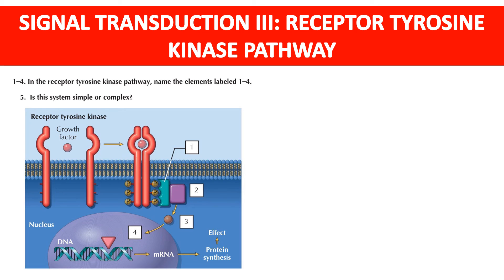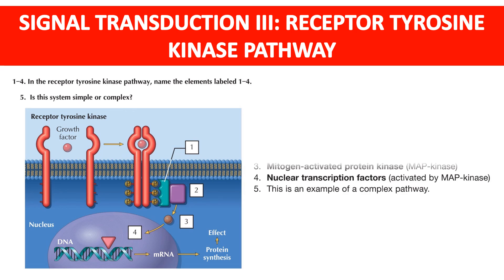Receptor tyrosine kinase pathway: name the elements labeled 1 to 4 and determine whether this system is simple or complex. Number 1 is an adaptor protein, number 2 is a monomeric G-protein, number 3 is mitogen-activated protein kinase (MAPK), and number 4 is a nuclear transcription factor activated by MAPK. This is an example of a complex pathway.